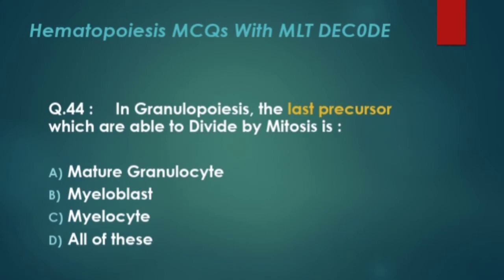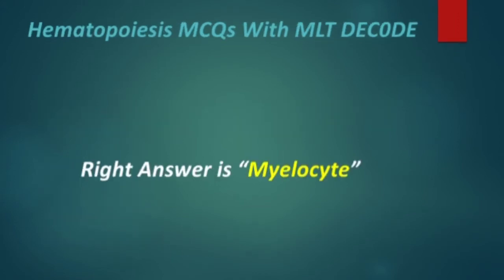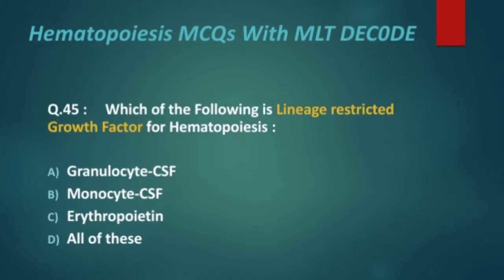Next, MCQ 44: In granulopoiesis, the last precursor which is able to divide by mitosis is? Options are: mature granulocyte, myeloblast, myelocyte, and all of these. The right answer is myelocyte.